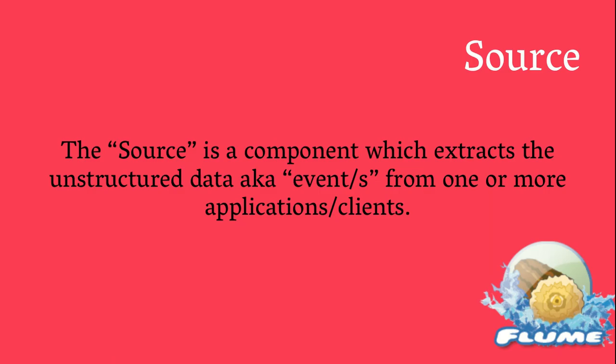Let's talk about the first component of the agent, which is called source. As the name suggests, it's a component which extracts the unstructured data — which we call an event — from one or more applications or clients. The basic unit of data being transported inside Flume is called an event. So the source is the component which will be extracting the data from one or more applications, which can be Twitter's data or web server logs. The source interacts with the applications.